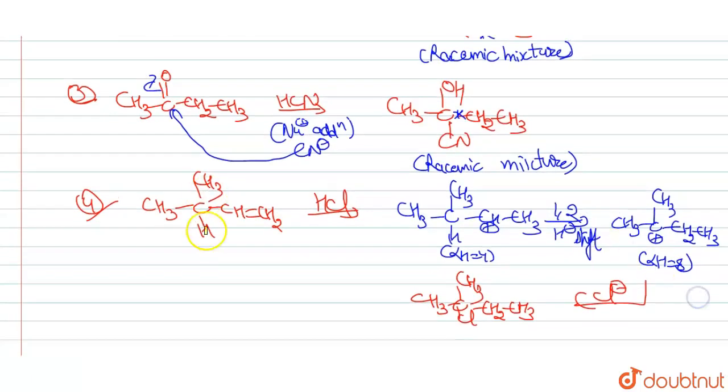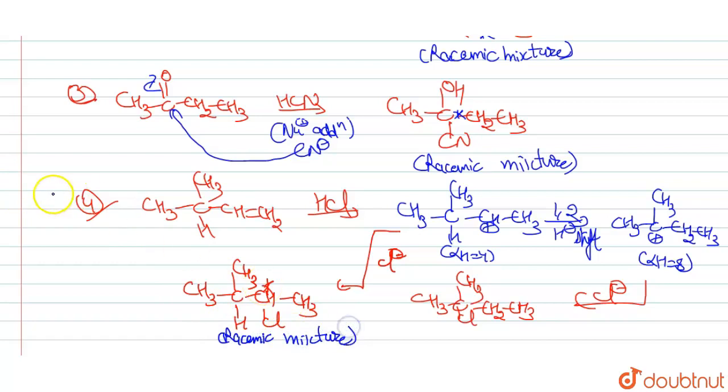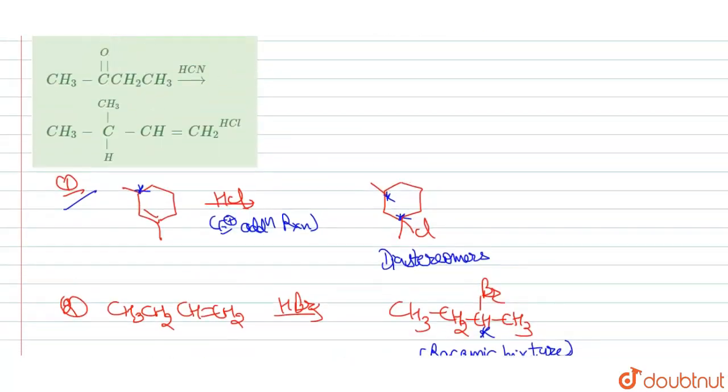Option 4 could be answered if there would be Markovnikov. This is the major product. If we attack it here at Cl-. If we attack it here. If we will do attack here Cl-, then what will be the product will form? Product will be formed. So here we have also formed the chiral center. So it will also, it is also racemic mixture. It is also racemic mixture. So fourth is also not answer. Our answer is only option 1.